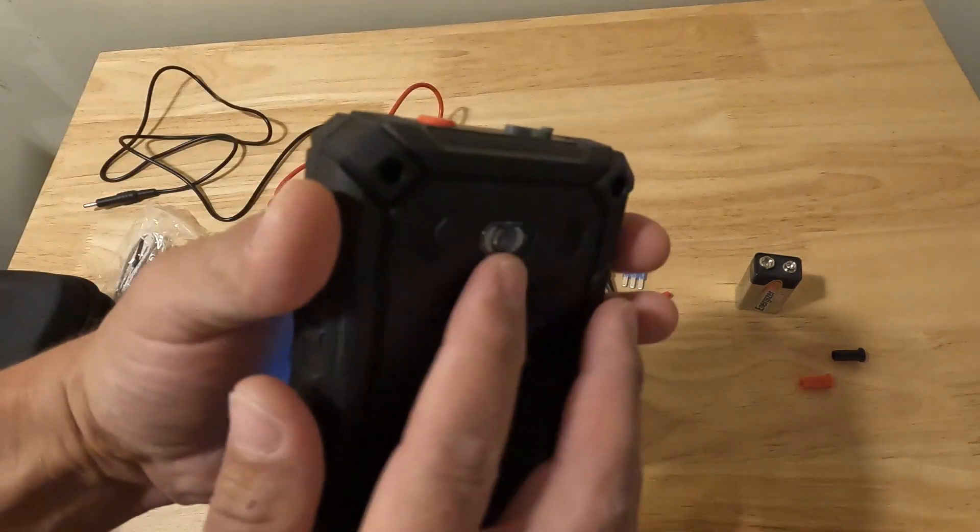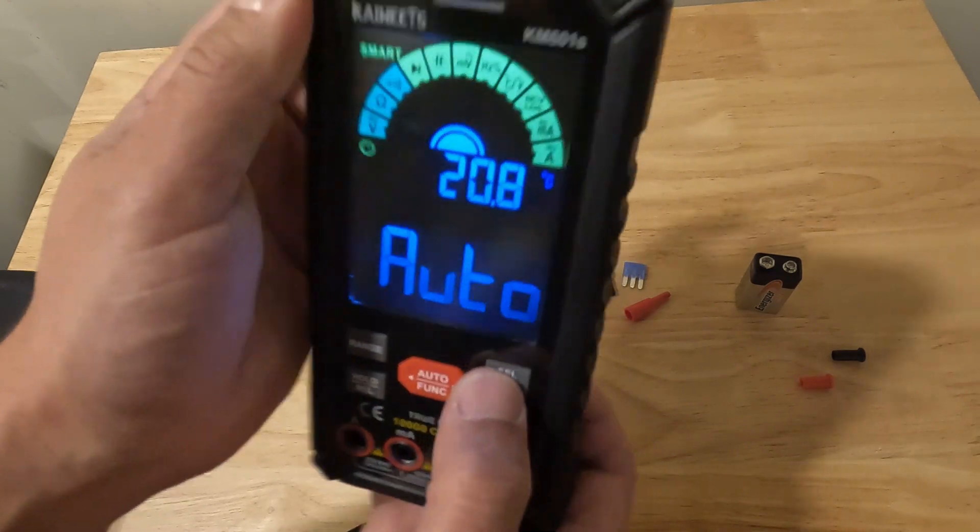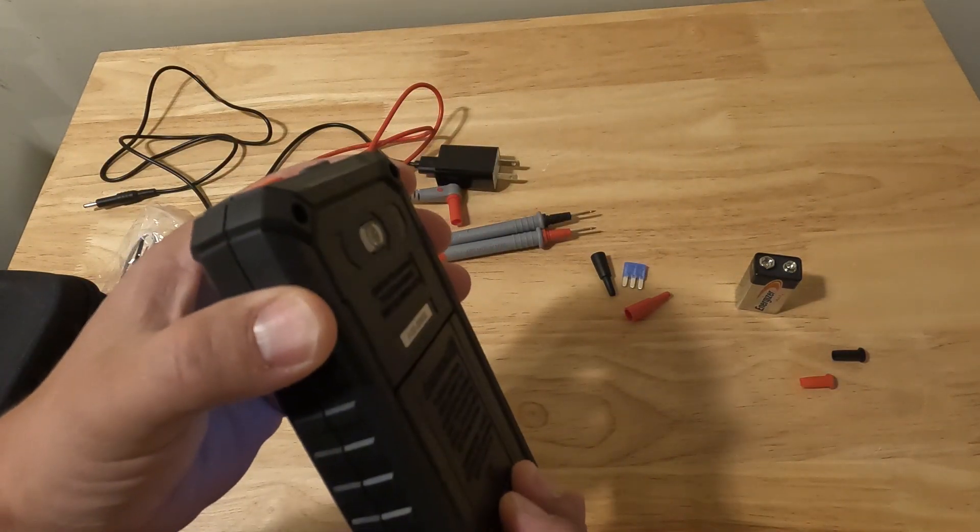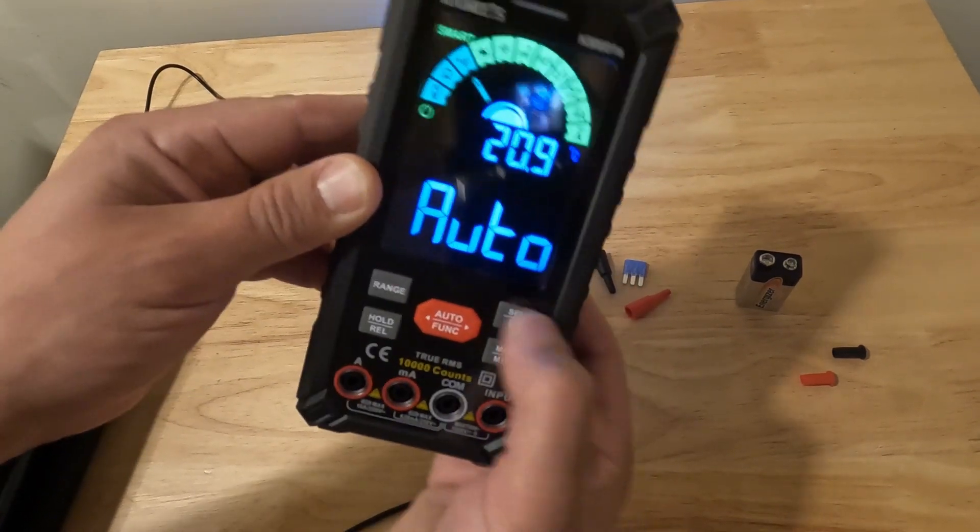This also comes with a flashlight on the back. To turn the flashlight on you just press and hold this button for about two seconds. You can see the flashlight turns on. Then to turn it off we just press and hold this button again for two seconds. Flashlight turns off.